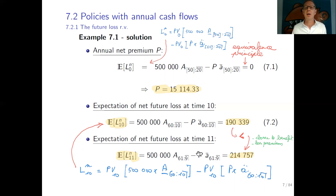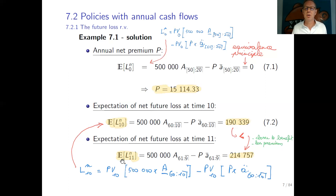We find that the expected loss at time 10 is smaller than at time 11. There are two reasons: first, at time 11 we are closer to the benefit payment, so the eventual death benefit or survival payment is coming sooner, increasing the expected loss. Second, there is one fewer premium to be paid at time 11. These two factors together explain why the expected loss increases over time.